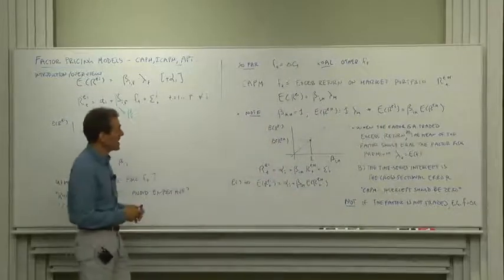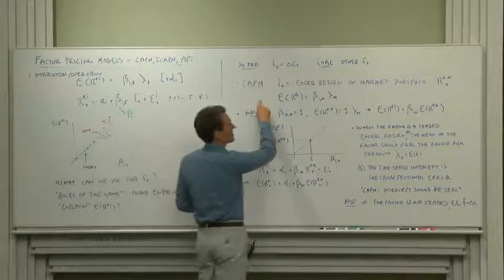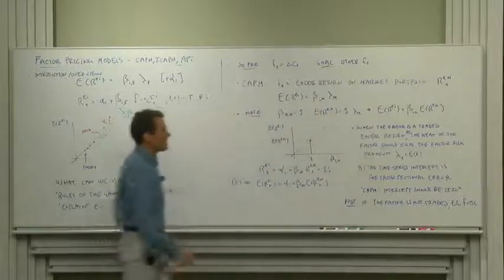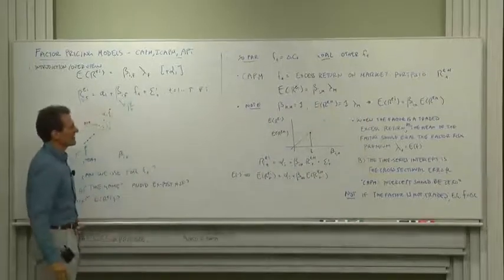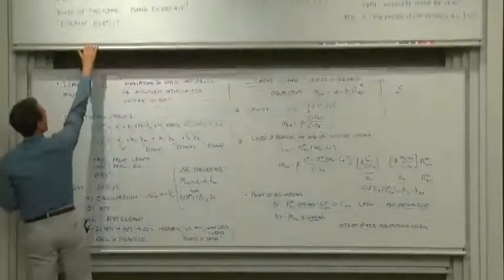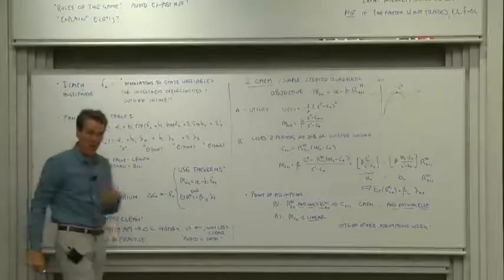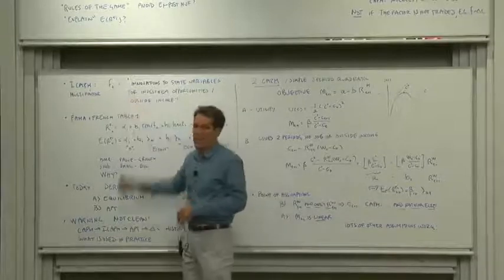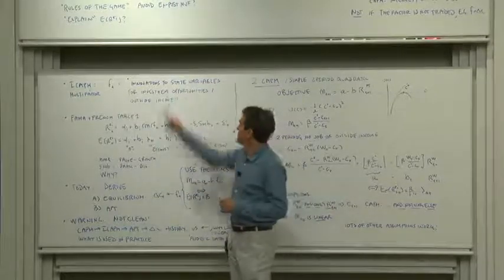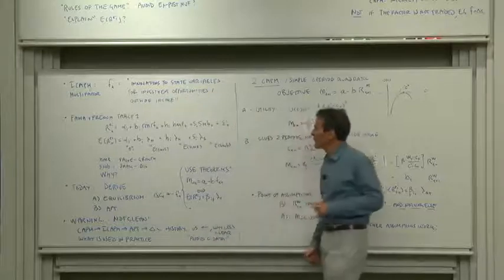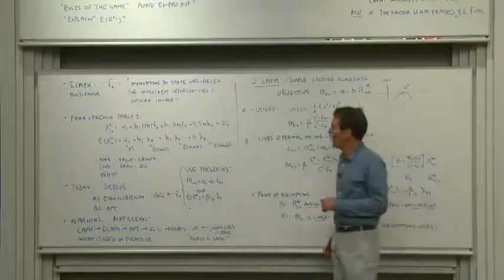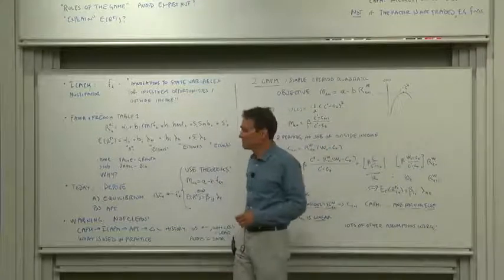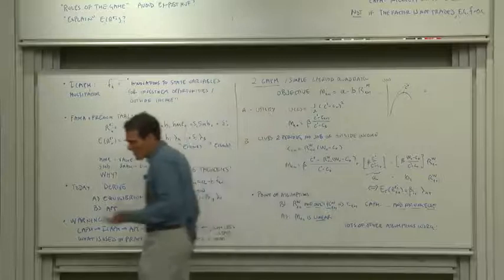Our first example that we're going to look at today is the CAPM expressed that way, and now you know how to translate it to that way because its return is a traded factor. We will also look at the ICAPM and multi-factor models. Here the factors go beyond the market return. They are innovations to state variables for investment opportunities or outside income. We'll have to learn what that means and how you're allowed to do that.